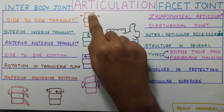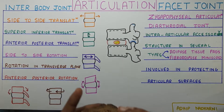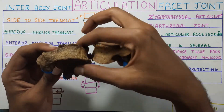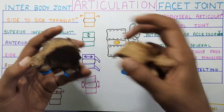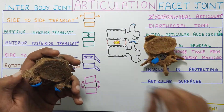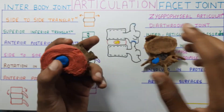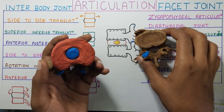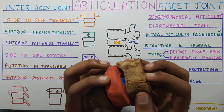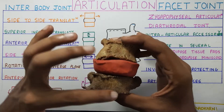The interbody articulation is the articulation occurring between the two vertebral bodies. This is my first body of the lumbar vertebra and the second body. If I take the disc and place it here, the disc will be sitting between the two bodies — and this is the interbody articulation.